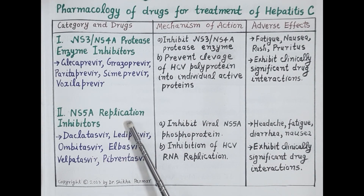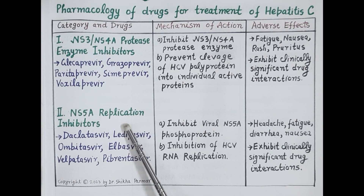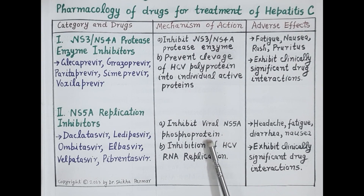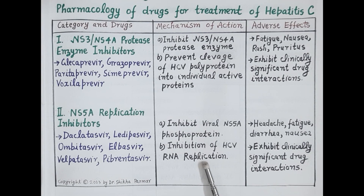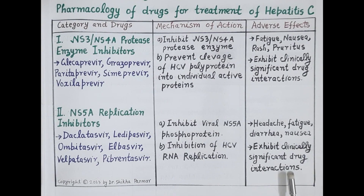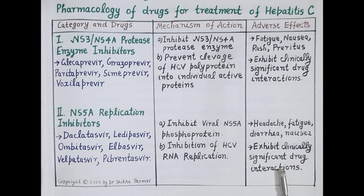The second category of direct-acting antiviral drugs are NS5A replication inhibitors. These drugs inhibit the viral NS5A phosphoprotein, and inhibition of this protein inhibits hepatitis C virus RNA replication. Adverse effects include headache, fatigue, diarrhea, and nausea. These drugs also exhibit clinically significant drug interactions when combined with other drugs.